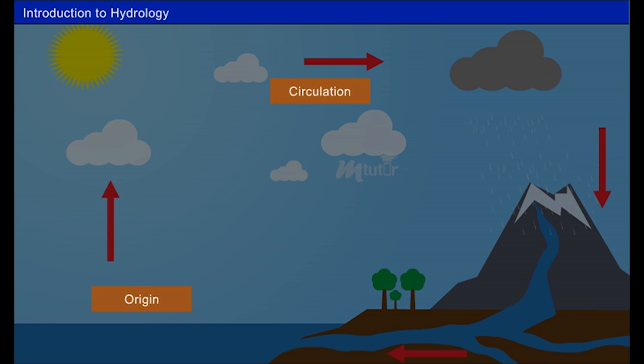The science behind the origin, circulation and the distribution of water on the surface of the earth and the atmosphere is termed as hydrology. Hydrology is derived from the terms hydro-water and logi-science. Simply, water science.